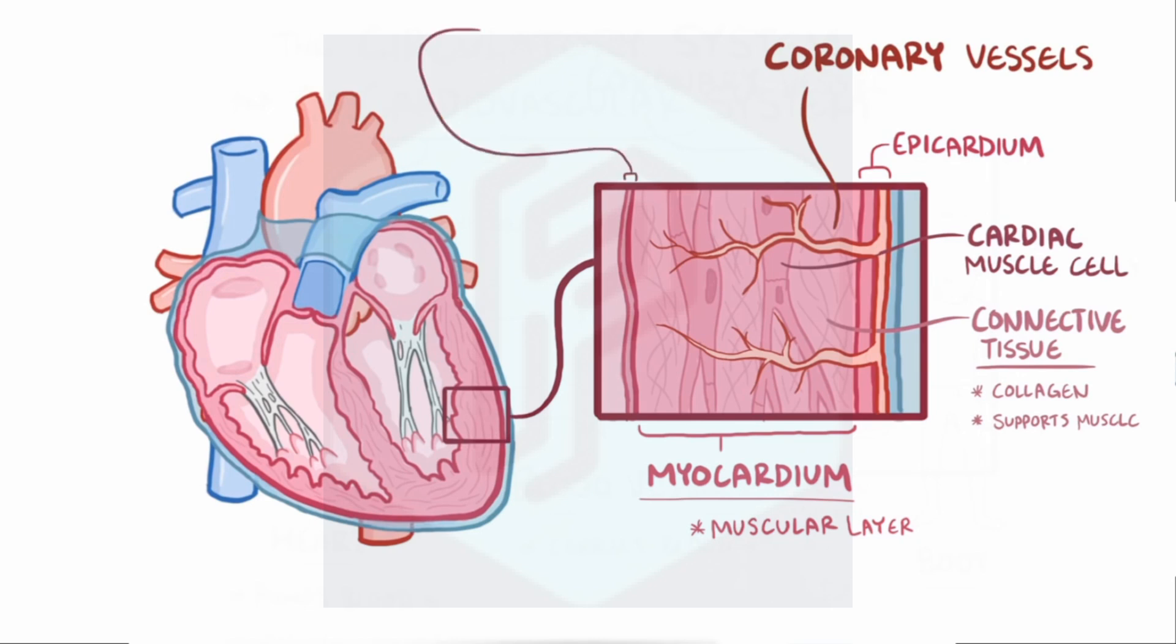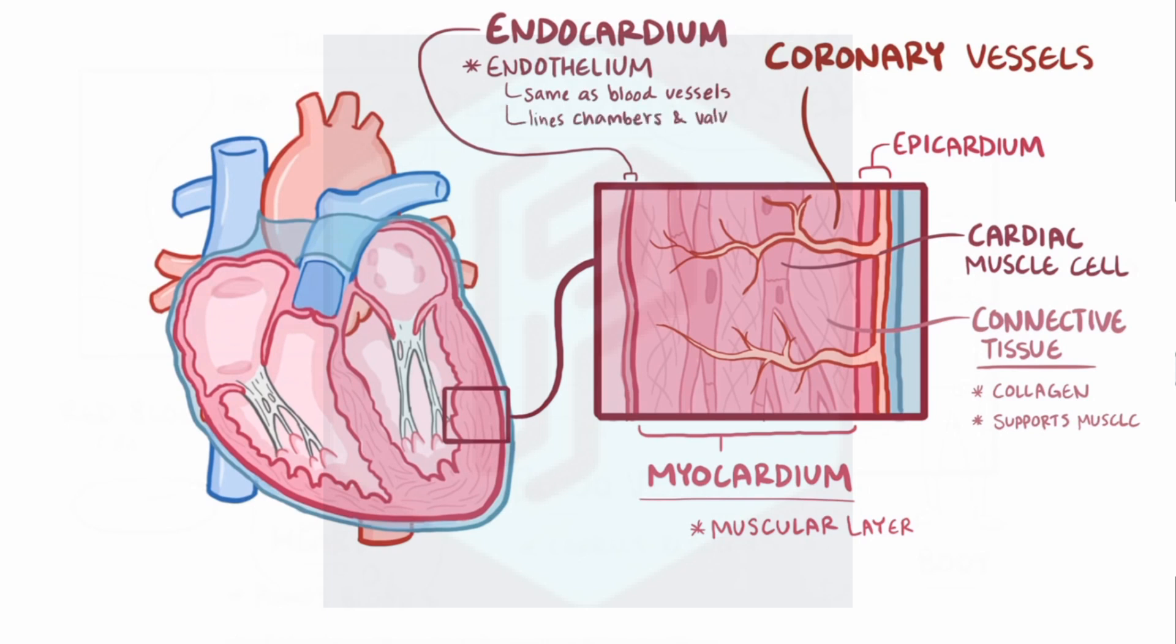Finally, there's the innermost layer of the heart called the endocardium, which is made of a relatively thin layer of endothelium, which is the same layer of cells that line the blood vessels. This endocardium lines the heart chambers as well as the heart valves.